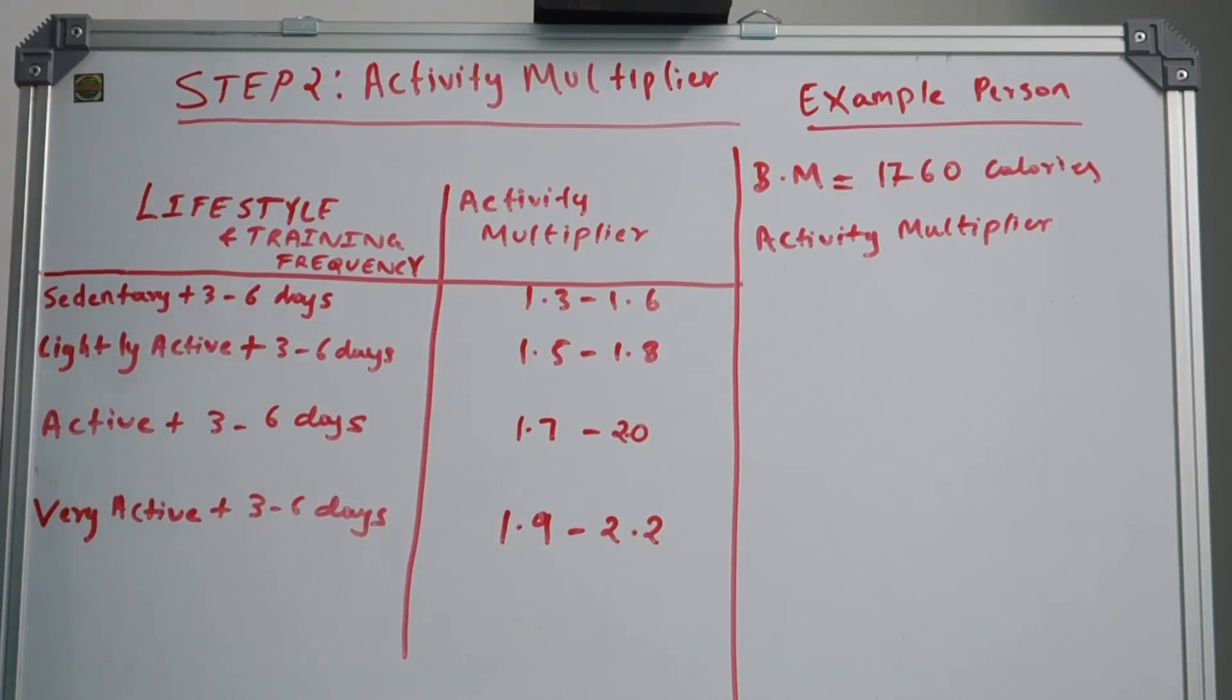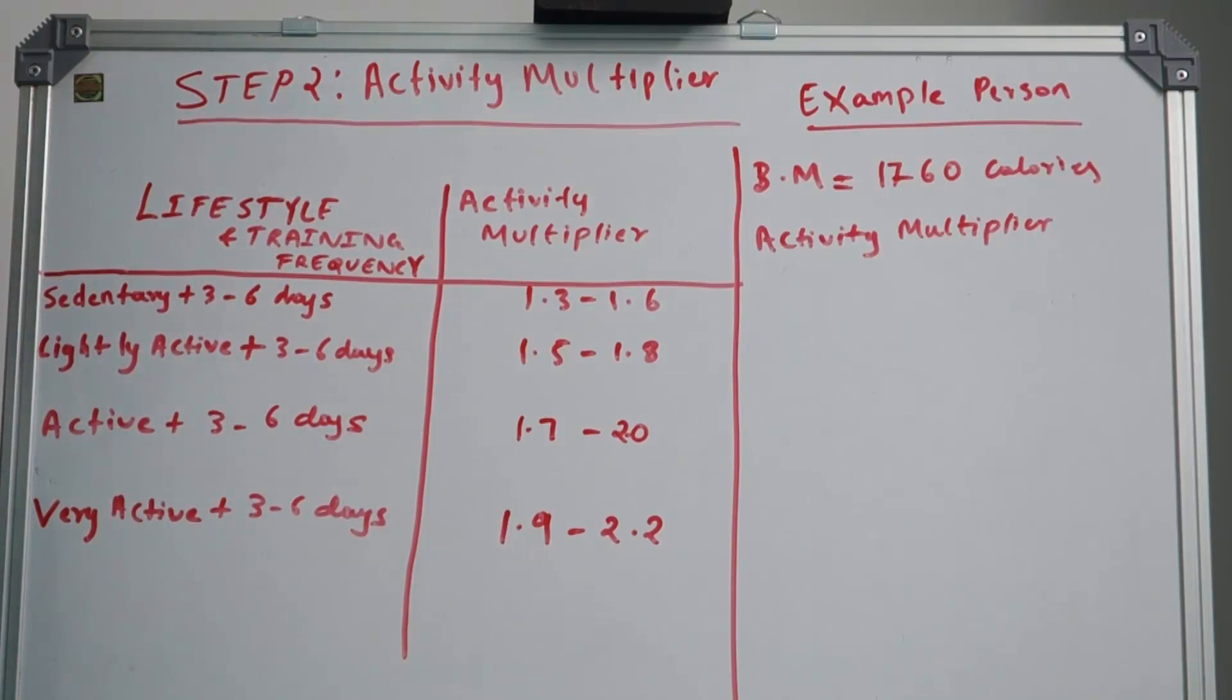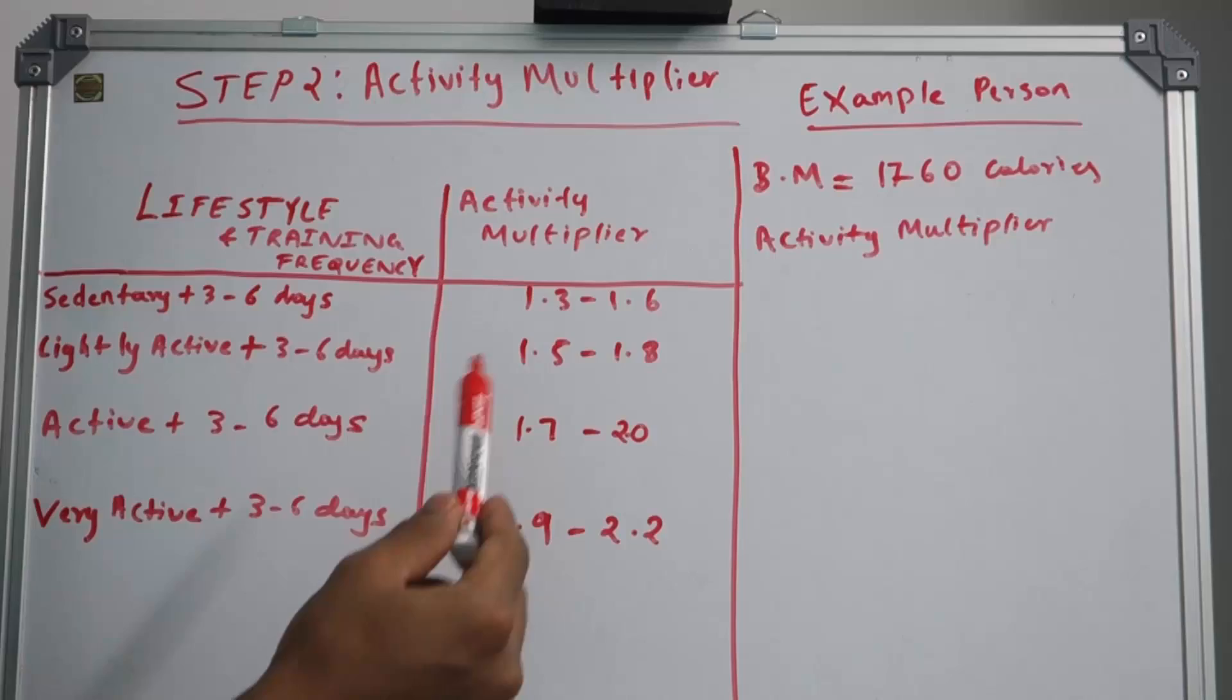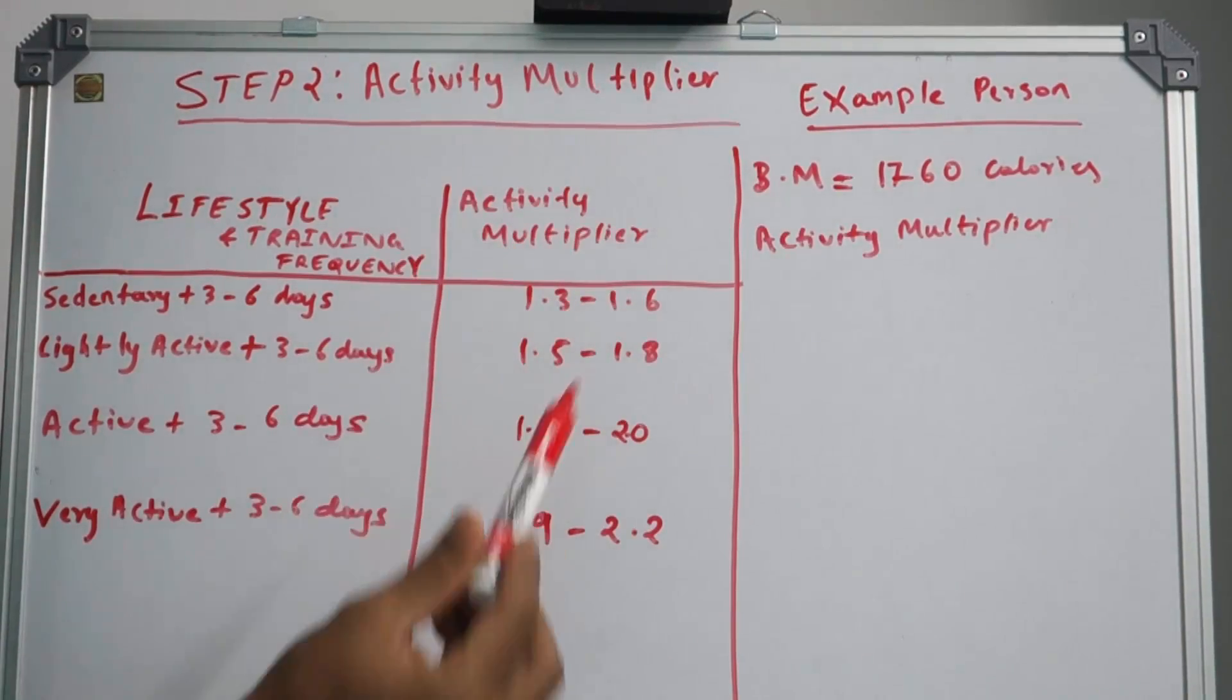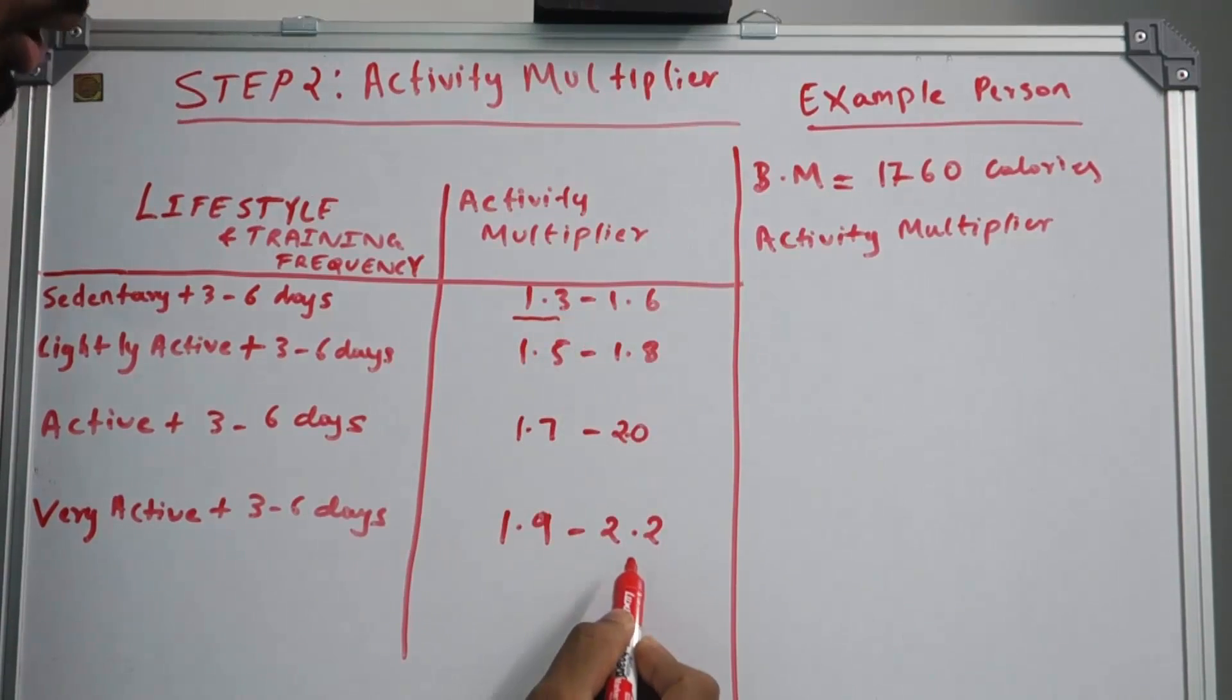If you are an athlete then you are very active. Training frequency is how many days a week you train with weights. The activity multiplier can start from 1.3 to 2.2—2.2 is the maximum and 1.3 is the lowest.